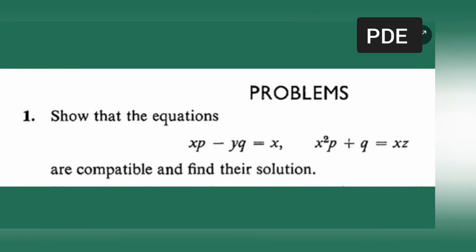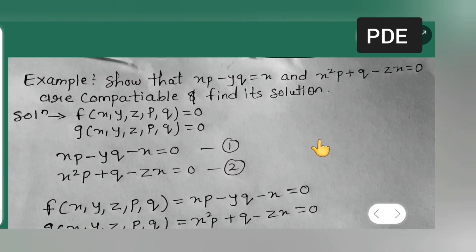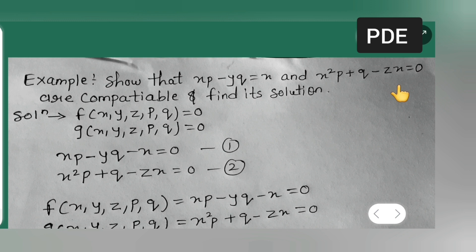In today's lecture, I am going to show that the equations xp minus yq equals x, and x squared p plus q equals xz, are compatible and find a solution. This is one example from the compatible theorem. Show that xp minus yq equals x and x squared p plus q minus zx equals zero are compatible and find its solution.